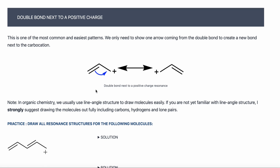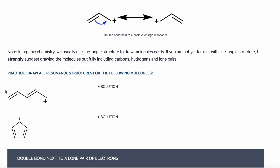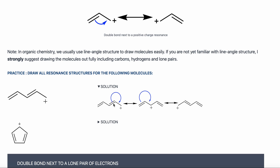Let's look at a couple of examples. In this first example, I notice a double bond next to a positive charge — that means I can do this resonance. I move the bond over: this carbon is now neutral, but this carbon lost its bond and has a positive charge. The bond moved to the right side. Every time you do resonance, ask yourself: can I continue? You go until you cannot go anymore.